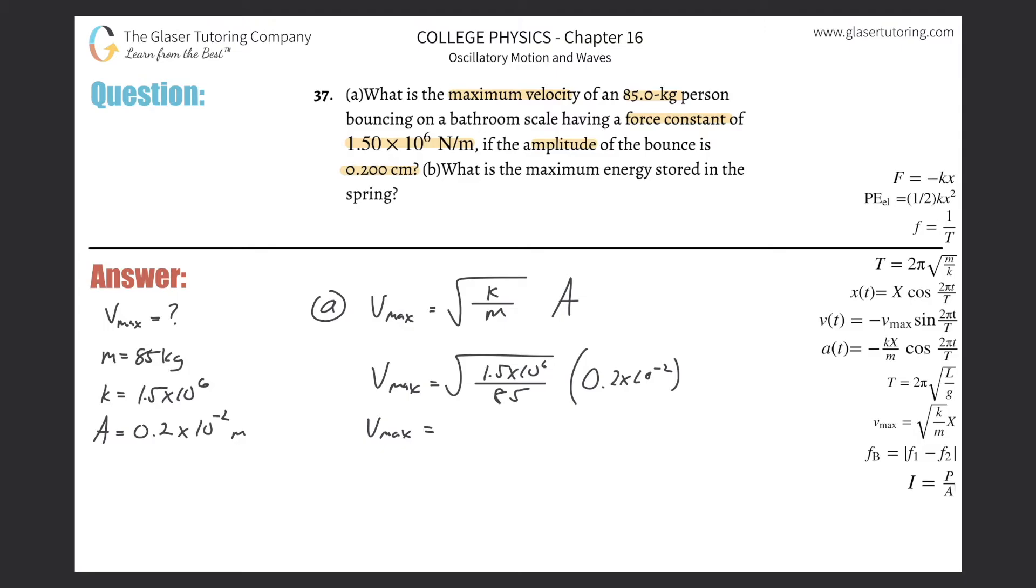Square root of 1.5 times 10 to the 6th divided by 85, get that answer, then multiply by 0.2 times 10 to the minus 2. We get a value of about 0.266 meters per second.